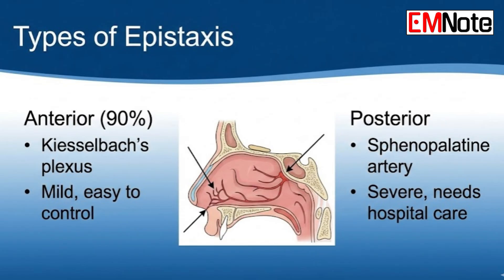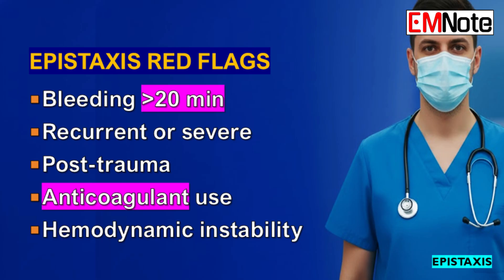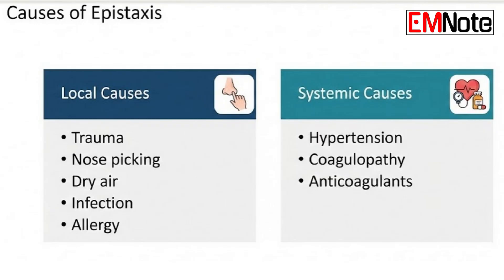To recap: most bleeds — 90% — are anterior from Kieselbach's plexus and easy to control. The critical 10% are posterior, coming from that high-pressure sphenopalatine artery, and require much more advanced care. Understanding that distinction is everything. But the work doesn't stop there — if you have a patient with recurrent epistaxis, especially an older adult, it is not just a nose problem. You have to be a detective and investigate those systemic diseases: uncontrolled hypertension, an undiagnosed liver issue, a coagulopathy. That systemic workup is often the missing piece that prevents the next, and potentially much worse, episode.